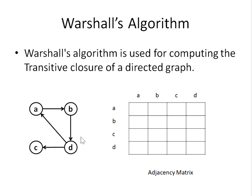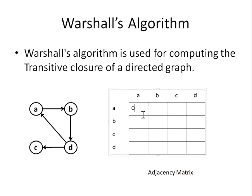First, we understand self-loops. If there is a path from a vertex back to itself — for example, A to A — that is called a self-loop. As we can see, there is no self-loop in this graph. So all diagonal elements — A to A, B to B, C to C, and D to D — will be 0, representing no self-loops.